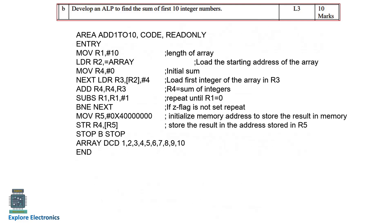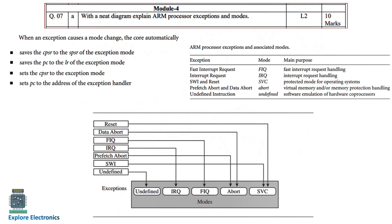The next question from Module 4 is: with a diagram, explain ARM processor exceptions and modes. The exceptions and their associated modes are: Fast Interrupt Request (FIQ), Interrupt Request (IRQ), SWI (Software Interrupt), Reset, Prefetch Abort, Data Abort, and Undefined Instruction. The corresponding modes and their purpose are given in a table. You need to write this with explanation alongside the diagram.